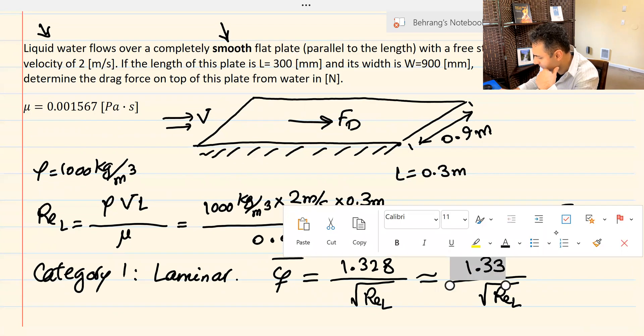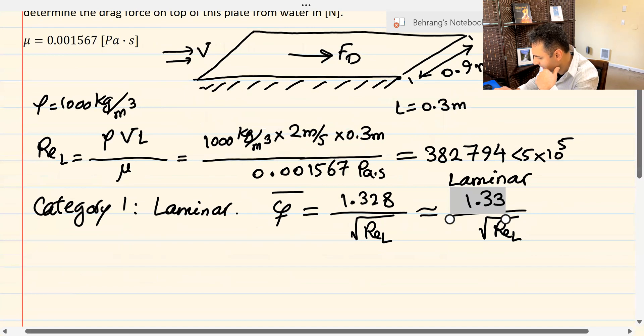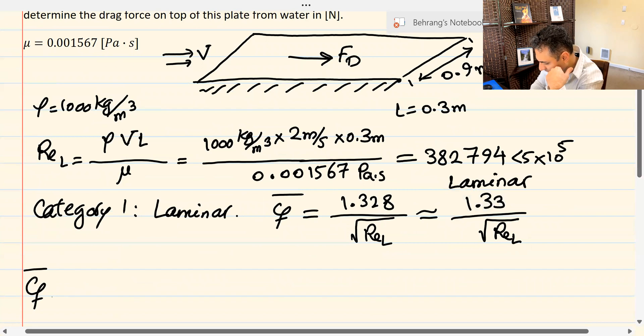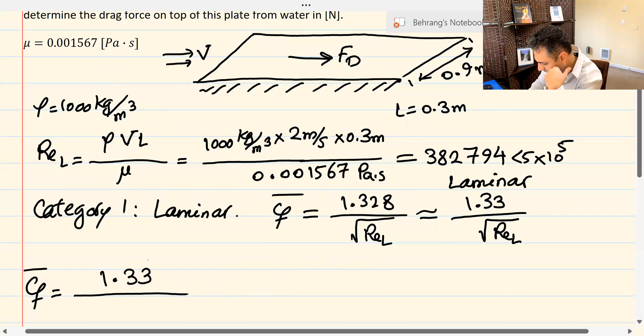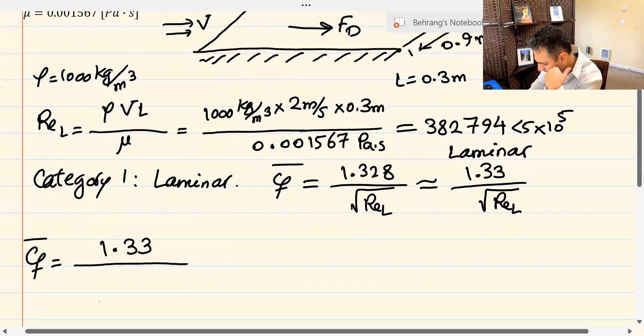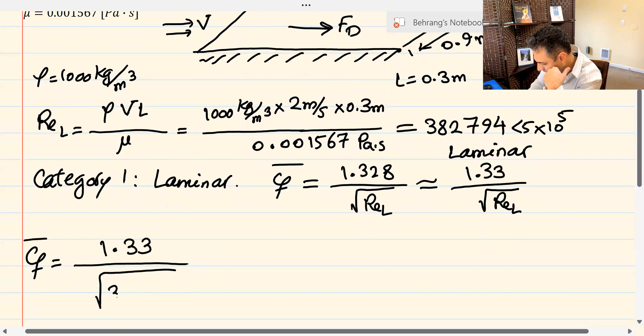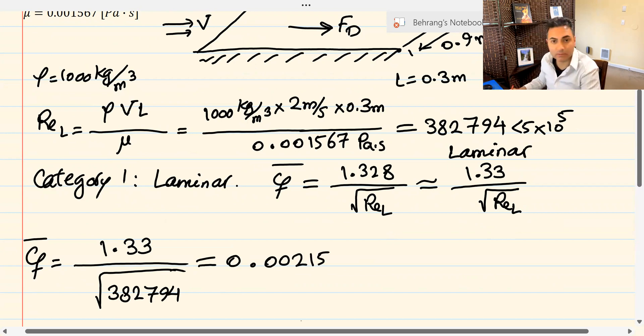Now that we have these numbers, we can calculate the friction coefficient. So the average friction coefficient average would be 1.33 over the square root of 382,794. And make sure you calculate this. I already calculated this value. It turns out to be 0.00215. And of course, friction coefficient is dimensionless.